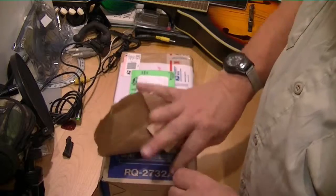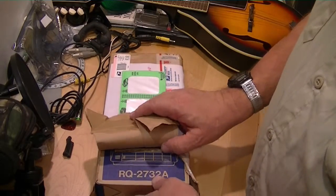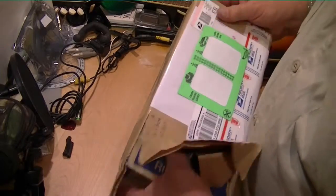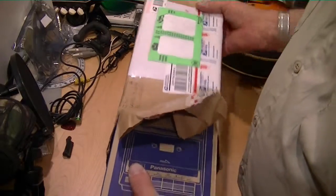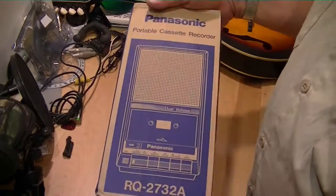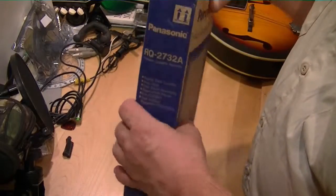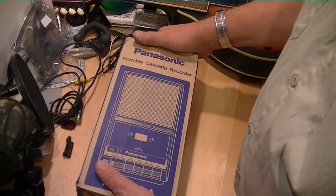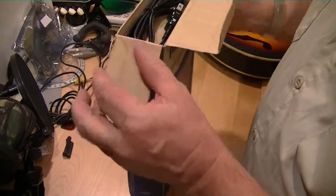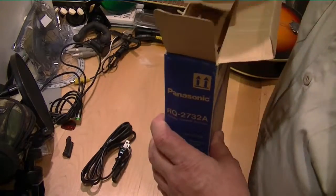I'm having an awful time getting this thing open here. You can see I'm struggling, but yes, 2732A, that was the number that was on that tape recorder that I used to use all those years ago. And who would have thought that I would ever find another one? This is brand new in the box. I mean, this is as it was sold in the store. The price was right on it, way under $30.